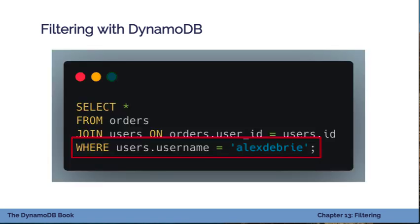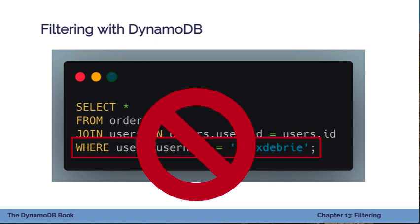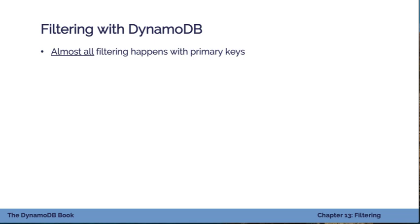If you're coming from a relational world, you're used to this very flexible SQL syntax where you have all these filtering options. You can add a WHERE clause and filter on all kinds of things — you can filter on a column in your table, join a table and filter on one of those columns, or use a function such as the current time to filter on that. You don't have that same sort of flexibility in DynamoDB. You need to be very intentional about how you're going to filter, and the key point is that almost all your filtering happens with the primary keys — either the primary key on your main table or on your secondary index.